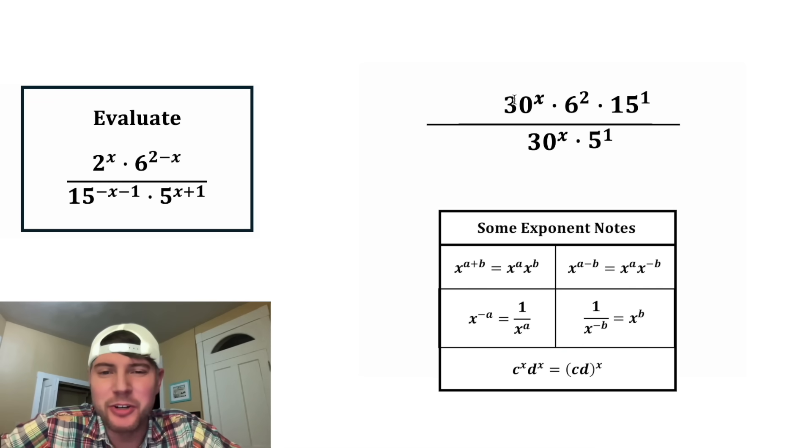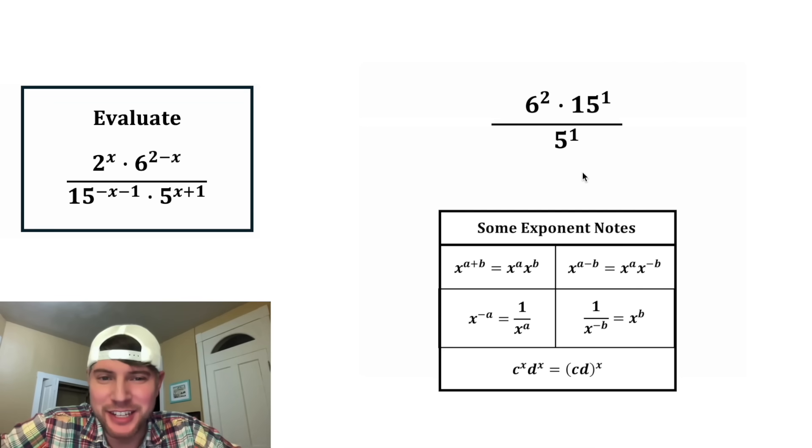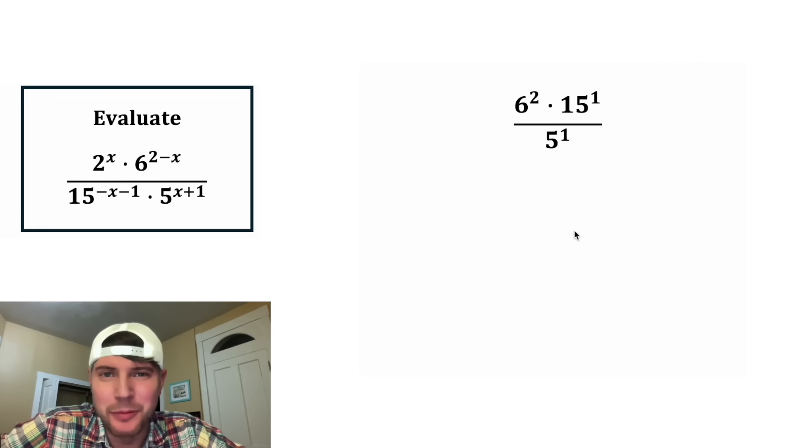And now since these match, the 30 to the x on top and the 30 to the x on bottom, they can cancel each other out. And now we've gotten rid of all the x's. So this is just going to be a number.